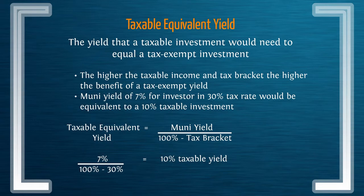In our example, we have a 7% Muni yield for someone with a 30% marginal tax rate. Our taxable equivalent yield is personalized — it really depends on what your marginal tax rate is, so it could be different for each investor. We take that 7% yield and divide by 100% minus the 30% marginal tax, and we get a 10% taxable yield. That's what any other investment — a stock or bond — would have to yield to have the same return as our tax exempt 7% Muni bond.